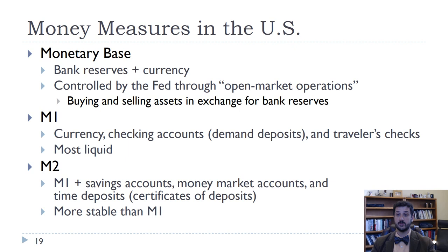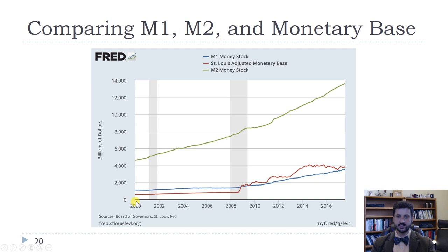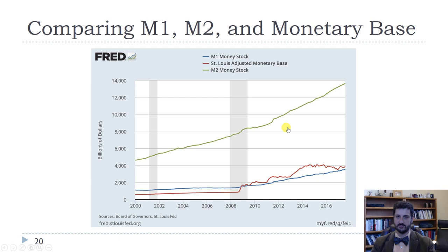Here we have M1 and M2 graphed on the same axis. M2 is not surprisingly significantly bigger than M1 since M1 is included in M2. We had a huge jump in the monetary base — the red line — going from about $900 billion to about $4 trillion. That was through something called quantitative easing, which we'll talk about more when we discuss monetary policy. M1 increased substantially as well, faster than it had been increasing from 2000 to 2008, whereas M2, while it did increase a little bit faster, is much more steady.